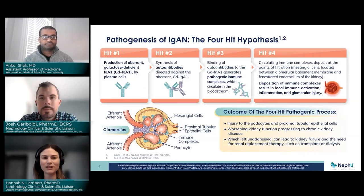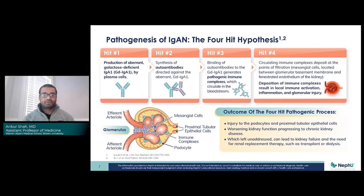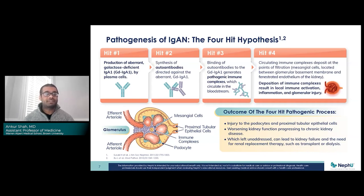Dr. Shah, you alluded to the pathogenesis of IgAN and the four-hit hypothesis. Can you go into more detail? Absolutely. The etiology of primary IgAN is still being elucidated, but we have this four-hit hypothesis. Environmental factors — including dietary antigens or mucosal infections — can drive the generation of pathogenic IgA immune complexes due to a dysregulated mucosal immune system. Normally your body produces IgA at mucosal surfaces as part of a natural immune response. There's a part of your GI tract called Peyer's patches — the lymph nodes of your GI tract — that produce normal IgA. In IgAN, you get aberrant, galactose-deficient IgA produced in those Peyer's patches.